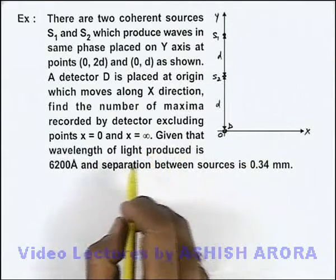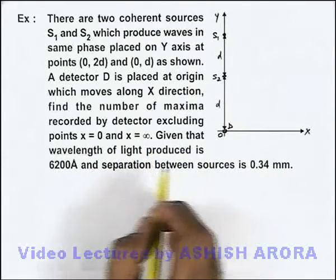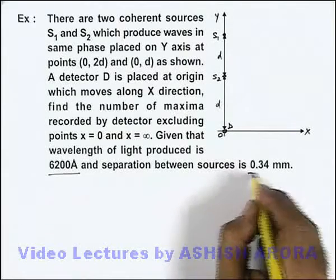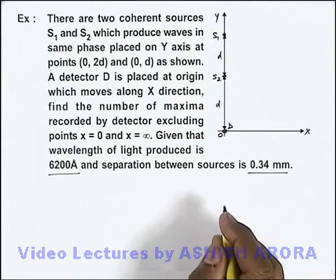Given that the wavelength of light produced is 6200 angstrom and separation between the sources is 0.34 mm.